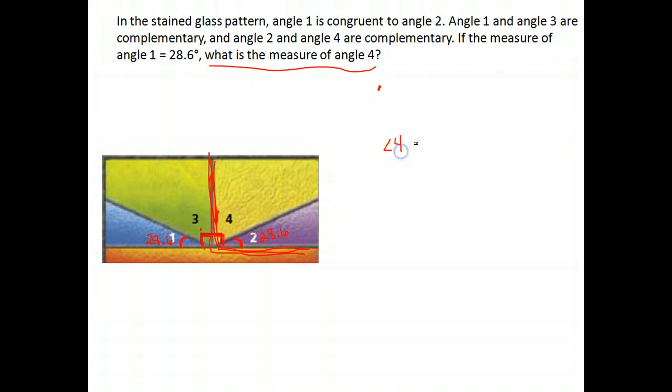So angle 4, whatever its measure is, plus the 28.6 that we know is the measure of angle 2, together those are 90.